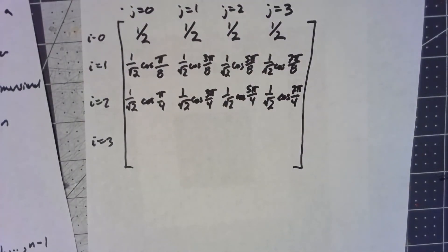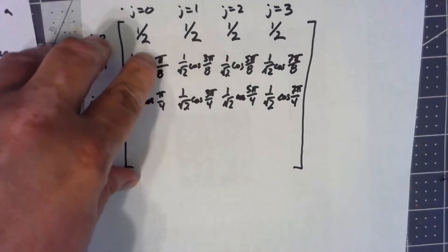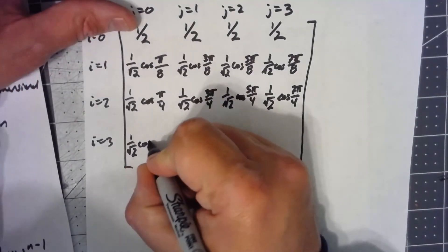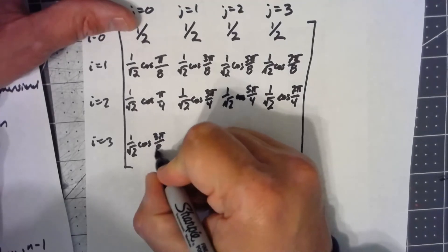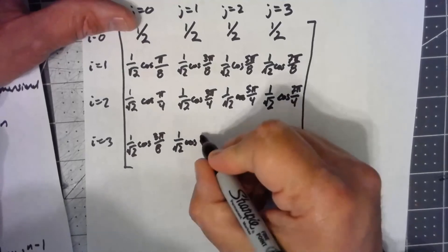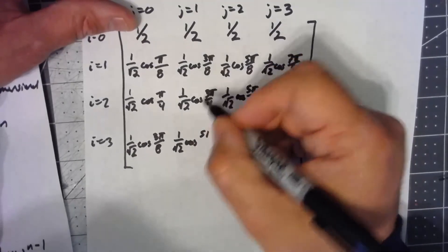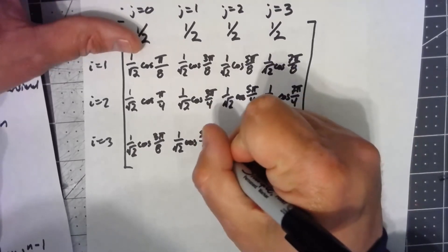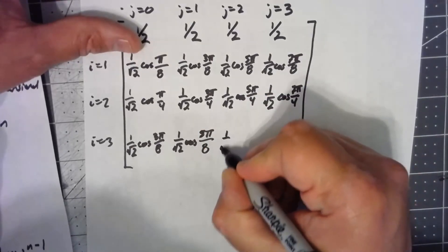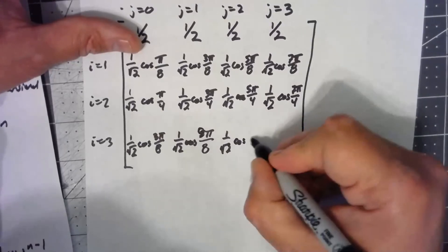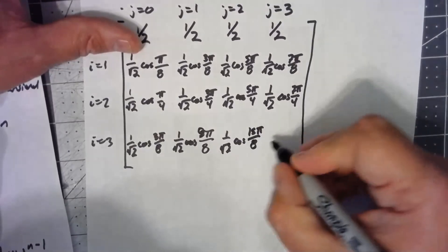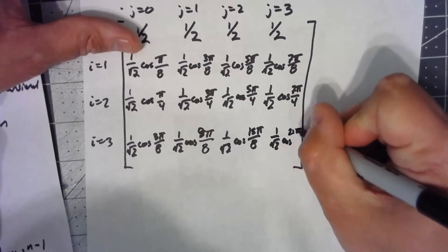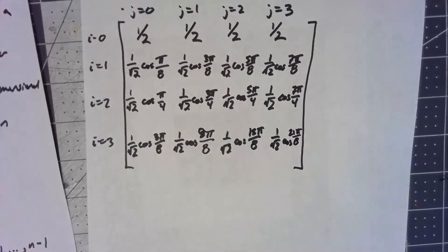Same thing, only now i is going to end up being 3, so the thing in my cosine is 3 times what was in this second line. So I've got 1 over the square root of 2 cosine of 3 pi over 8, and the remaining entries following the same pattern.